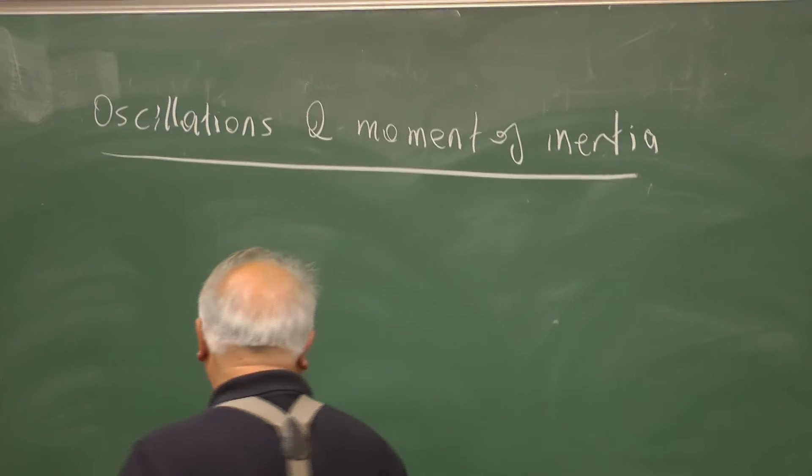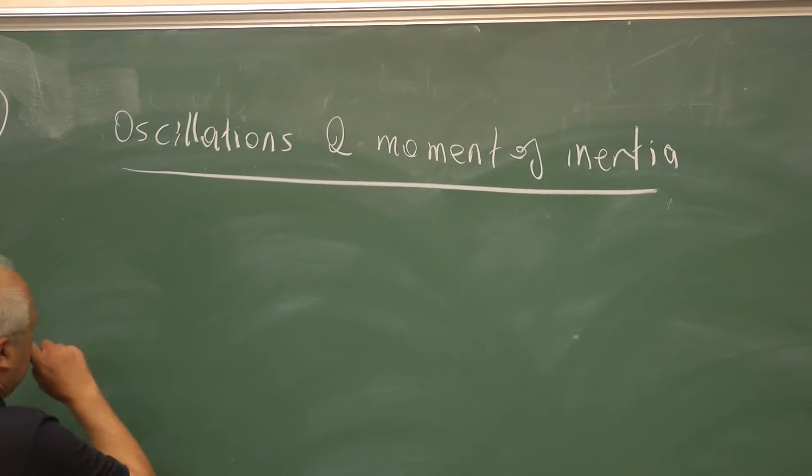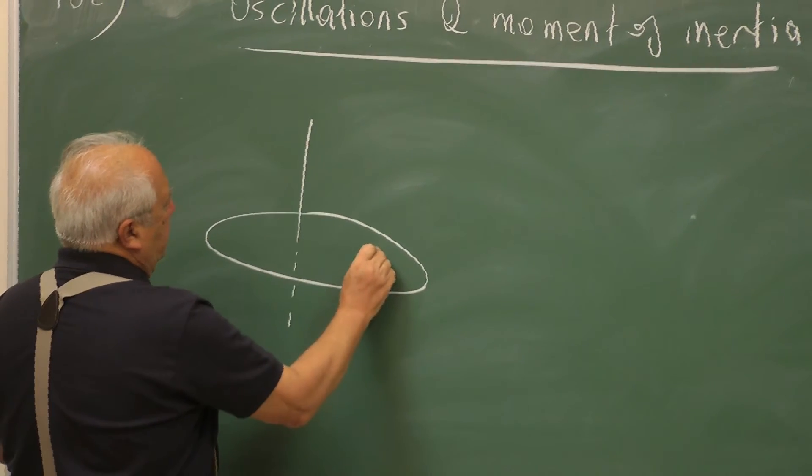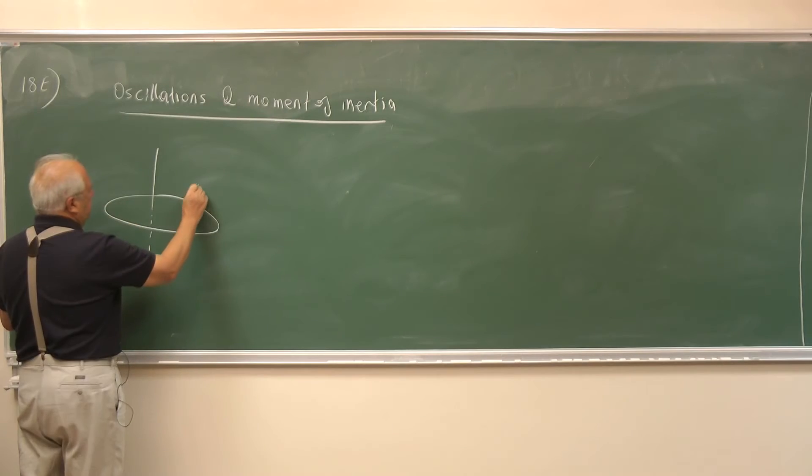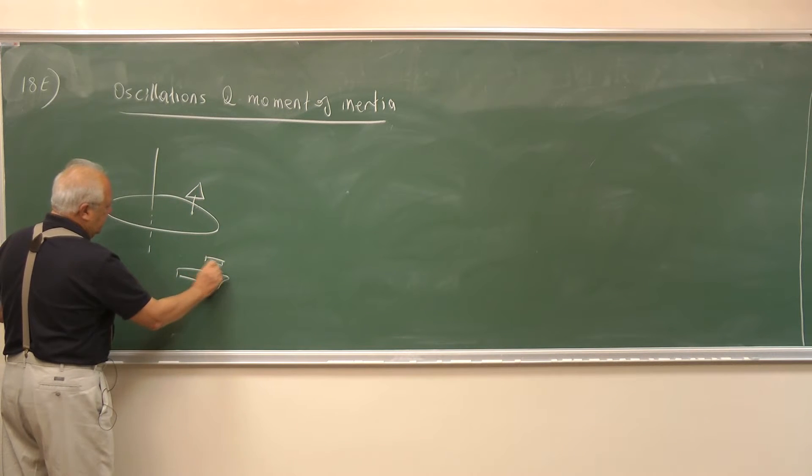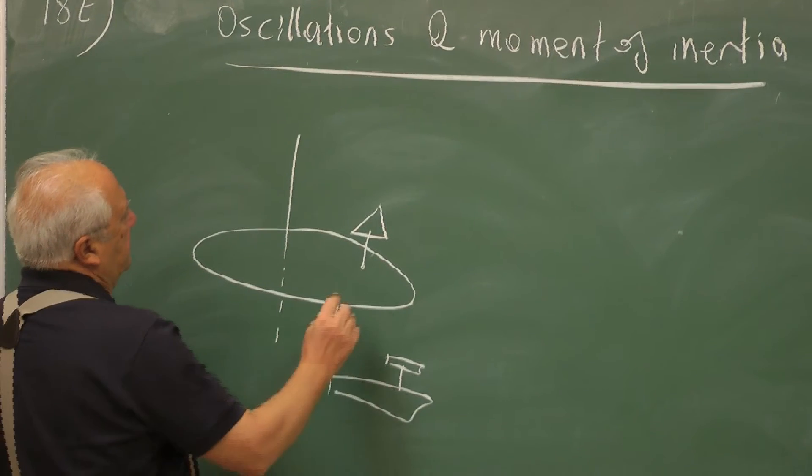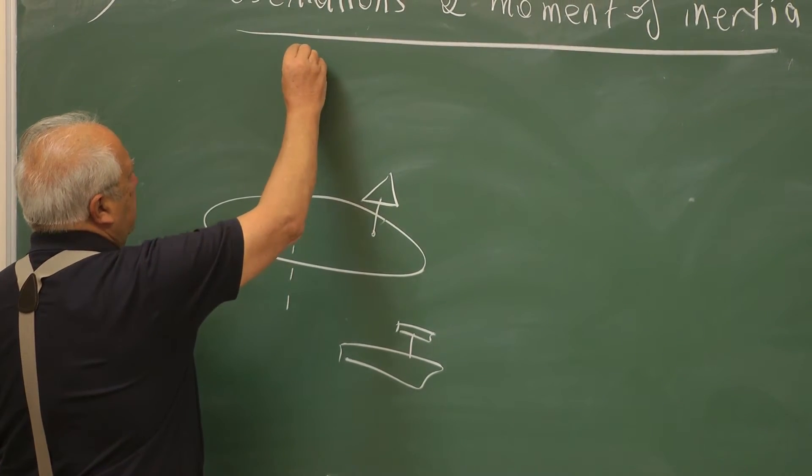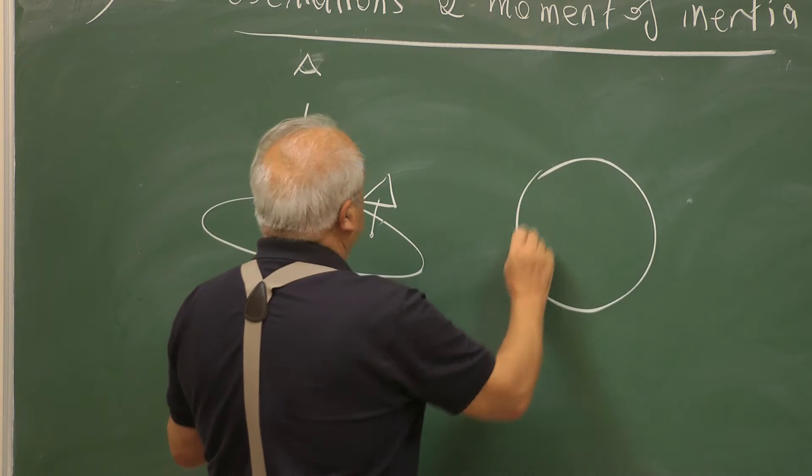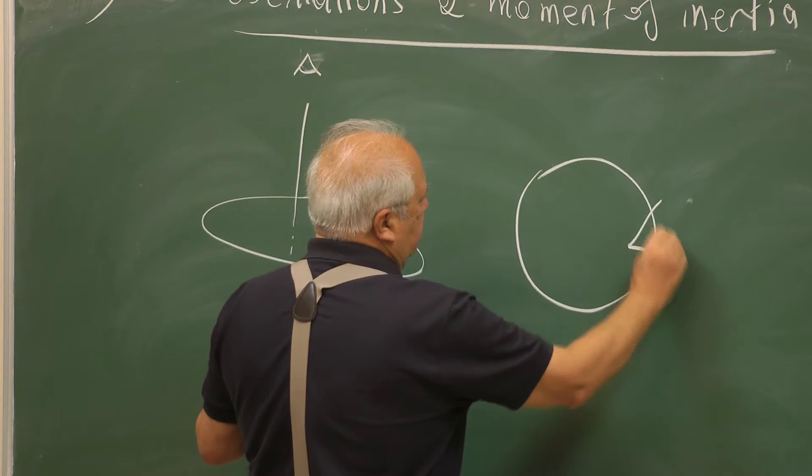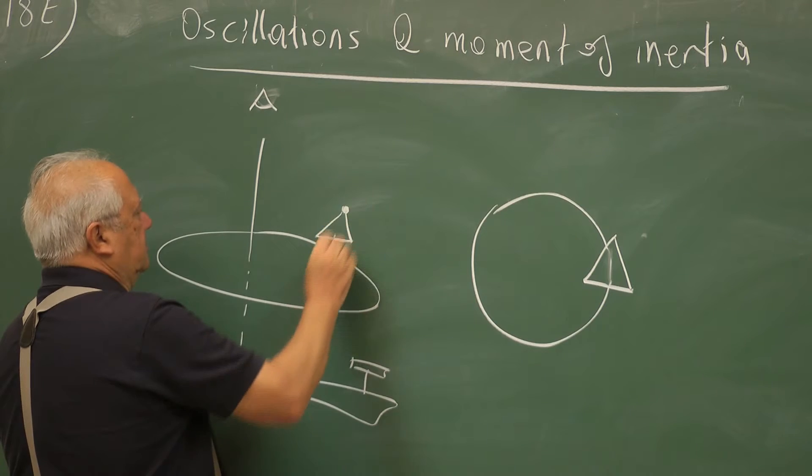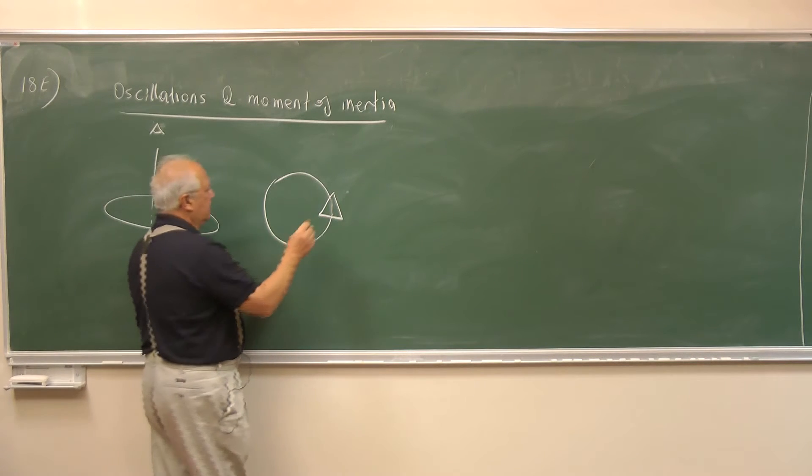Before discussing the problem, let me just consider a disk on which a shape is mounted, let's say in the form of a triangle. If you look from the side, it's like this. If you look from the top like this, we will see a circle and this triangle. Let me just paint one corner red and label it A.